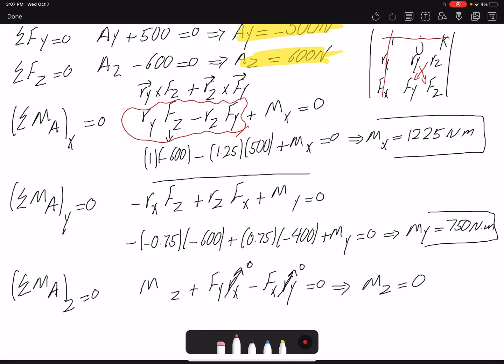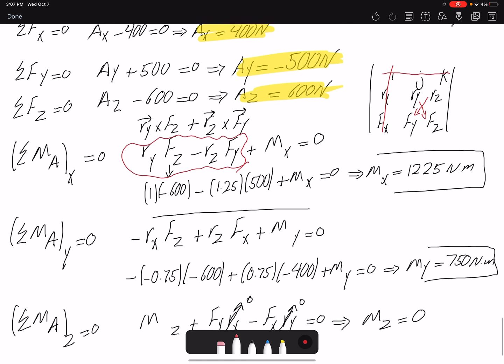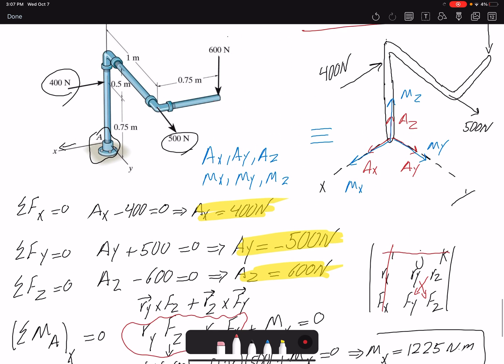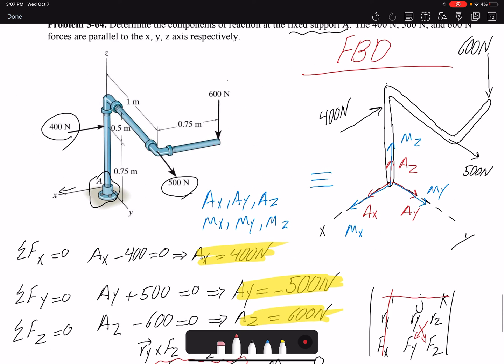Also, you should be able to look at the problem and use the right-hand rule to identify the value and direction of the moment. This 600N force, because it's parallel to Z axis, is not going to create a moment about Z, but it's going to create a moment about Y because we have a distance from Y, and also about X because we have a distance to X axis.